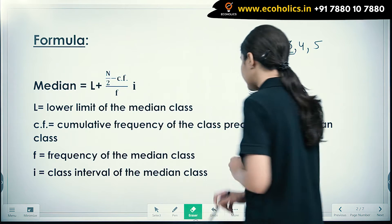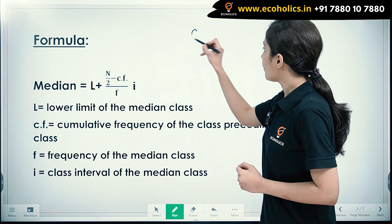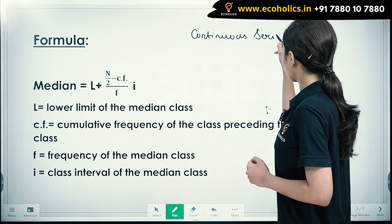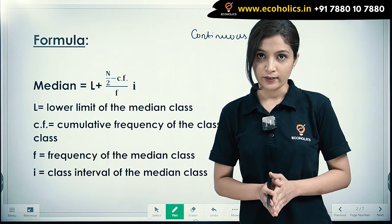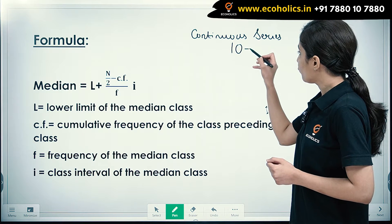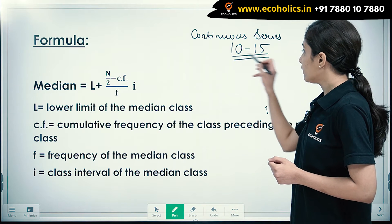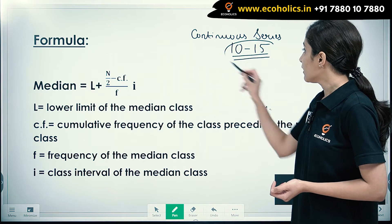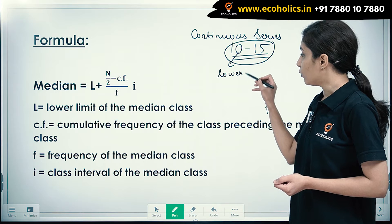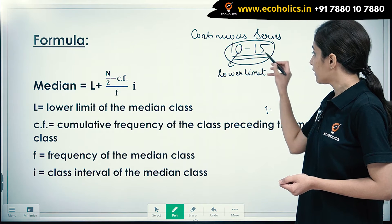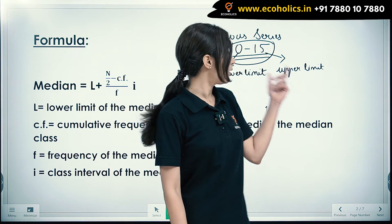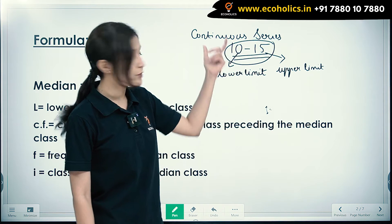Now let's understand what continuous series is. Continuous series are those series which have class intervals. For example, if wage rate of workers are between 10 to 15, this becomes our class interval. Here, 10 is our lower limit of the class interval and 15 is our upper limit of the class interval. This is what constitutes a continuous series.